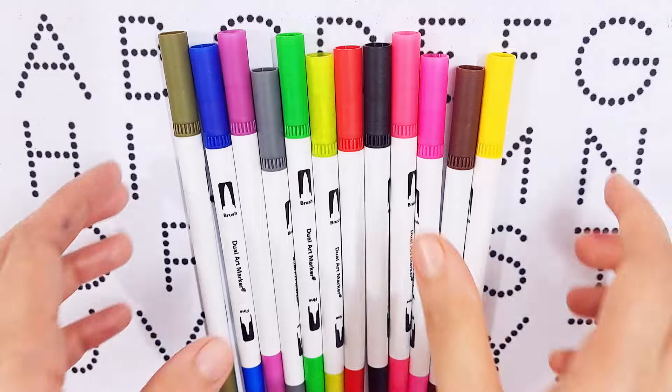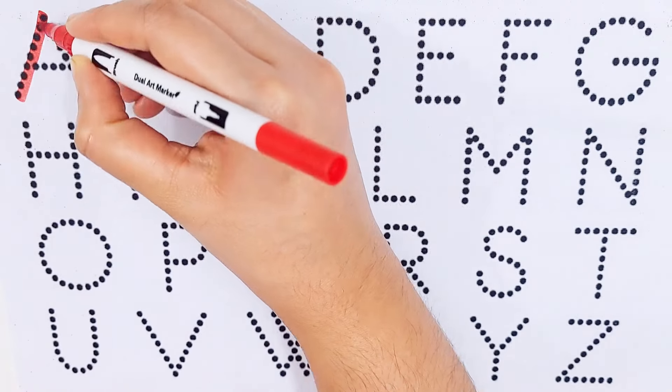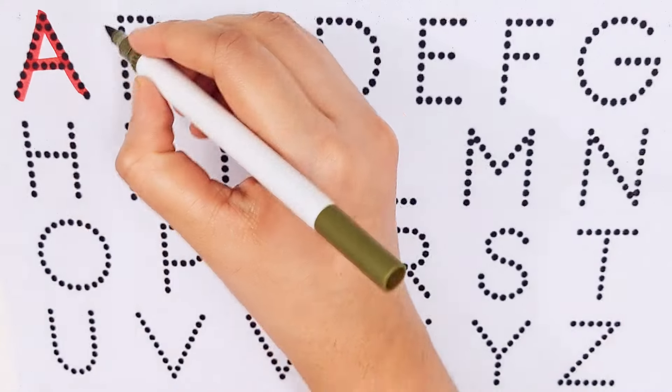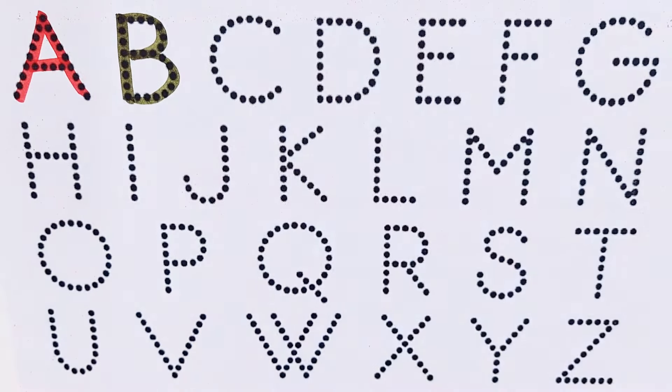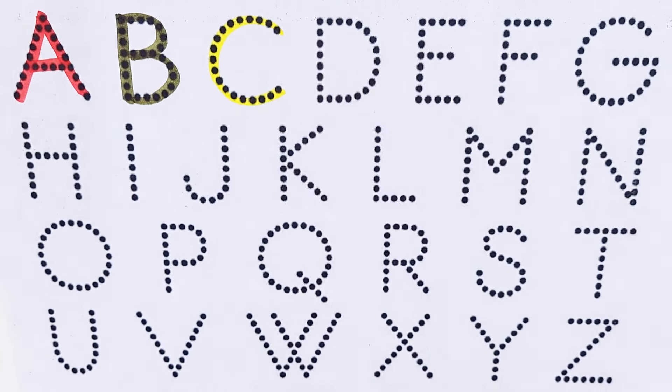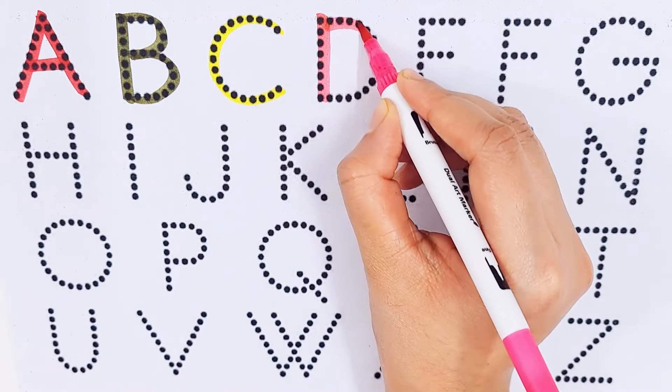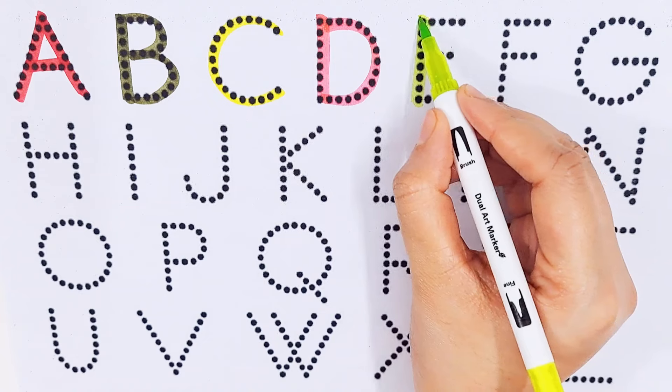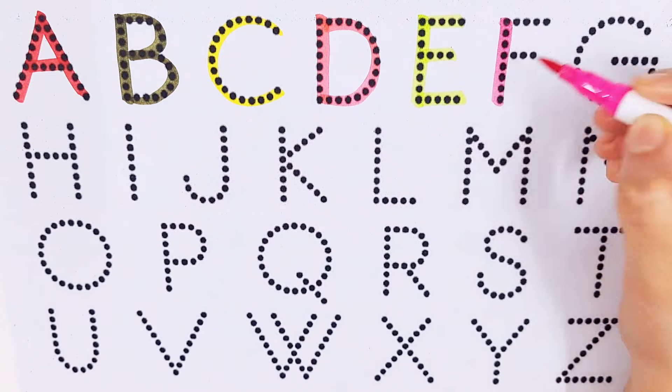A, A for arrow. B, B for box. C, C for chocolate. D, D for duck. E, E for yarn. F, F for flowers.